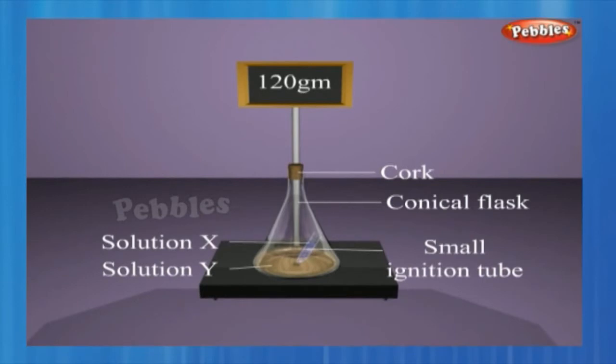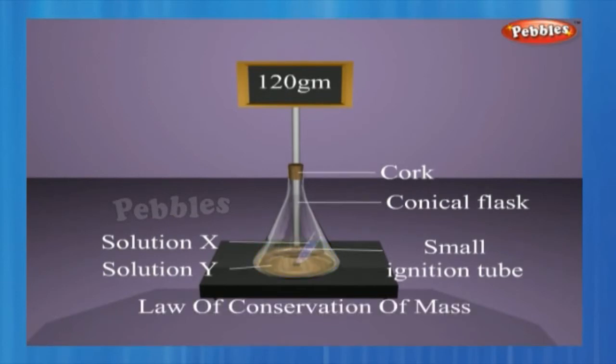Now, tilt and swirl the flask so that the solutions X and Y get mixed. Weigh again. It is observed that the mass remains the same.